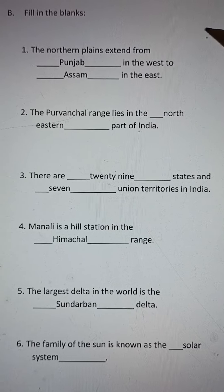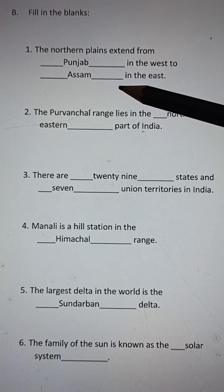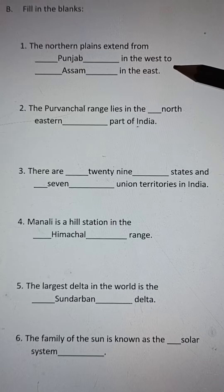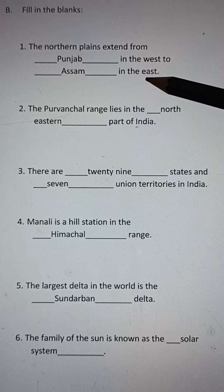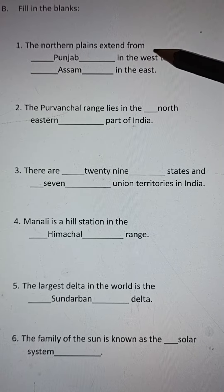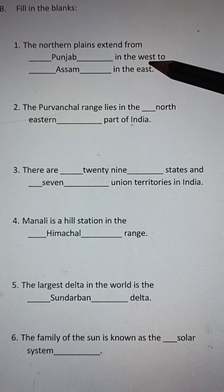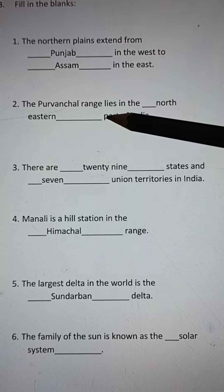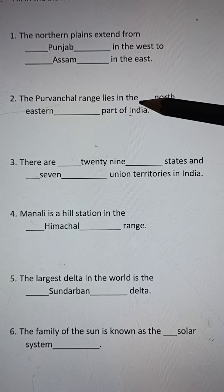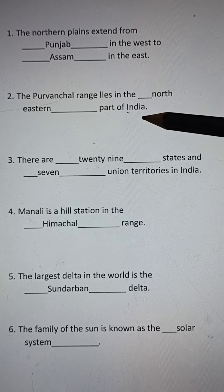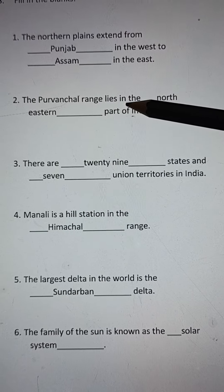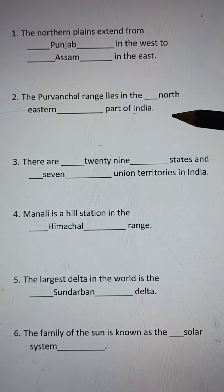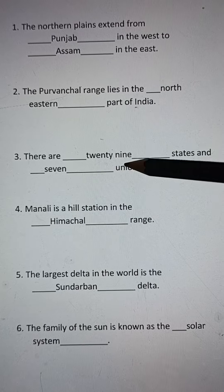Fill in the blanks. Number one: the northern plains extend from Punjab in the west to Assam in the east. Number two: the Provincial Range lies in the north-eastern part of India.